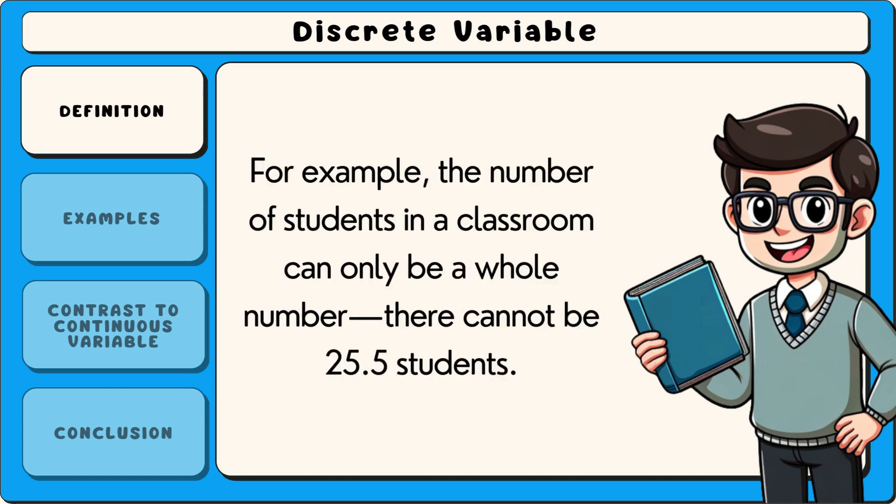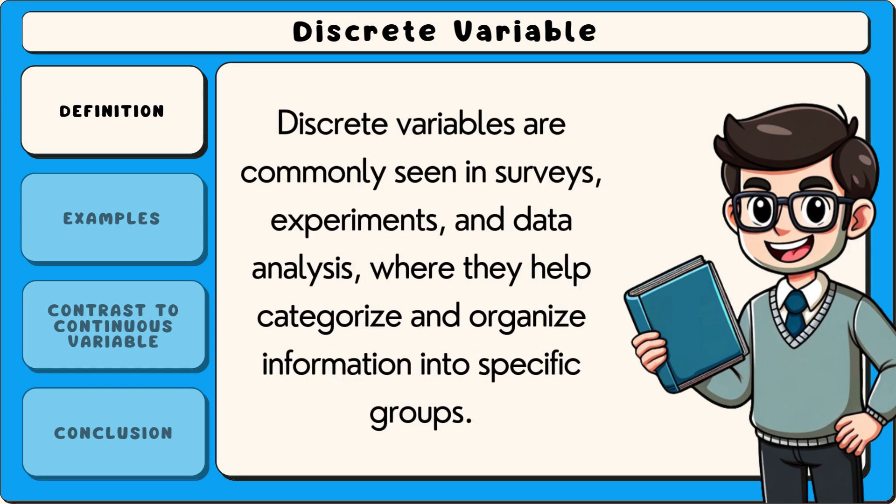For example, the number of students in a classroom can only be a whole number — there cannot be 25.5 students. Discrete variables are commonly seen in surveys, experiments, and data analysis, where they help categorise and organise information into specific groups.